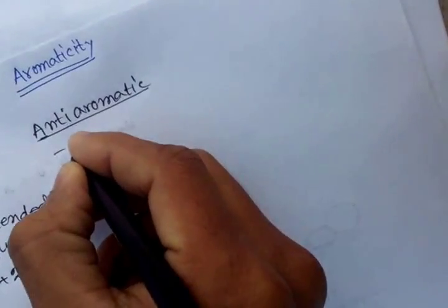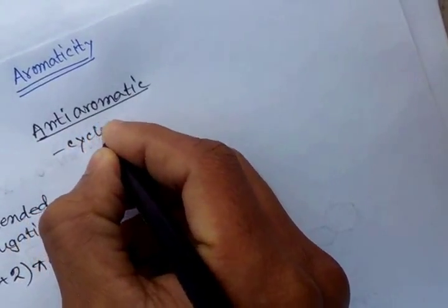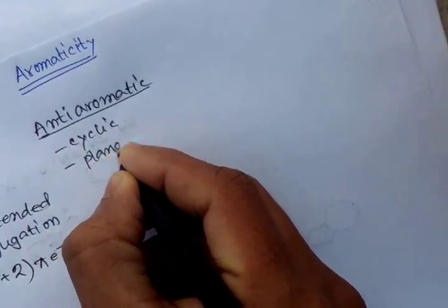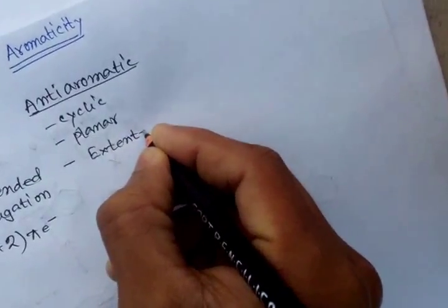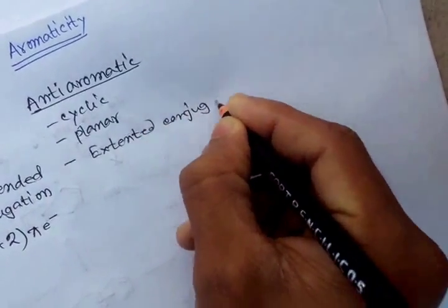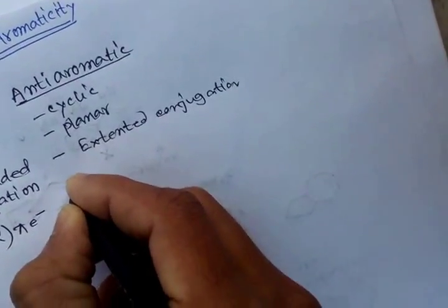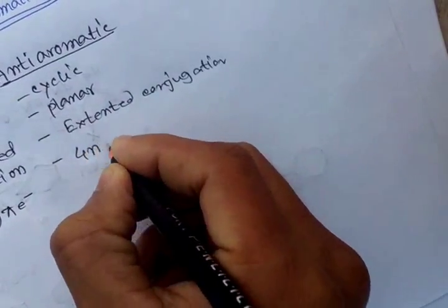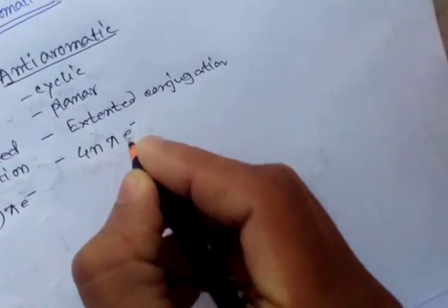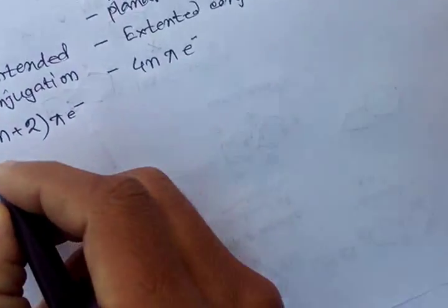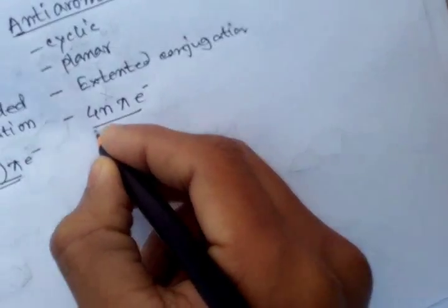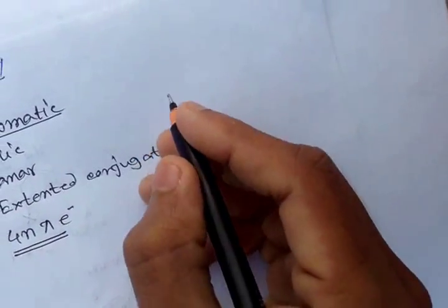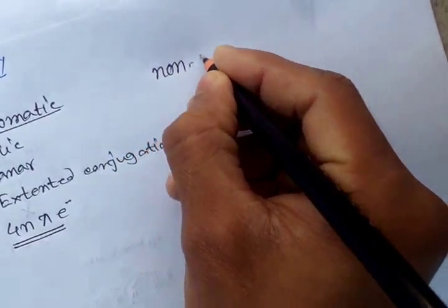On the other hand, a molecule is said to be anti-aromatic if it is cyclic, planar, has extended conjugation, and follows 4n number of pi electrons. The main difference between aromatic and anti-aromatic compounds is their number of pi electrons involved in conjugation.